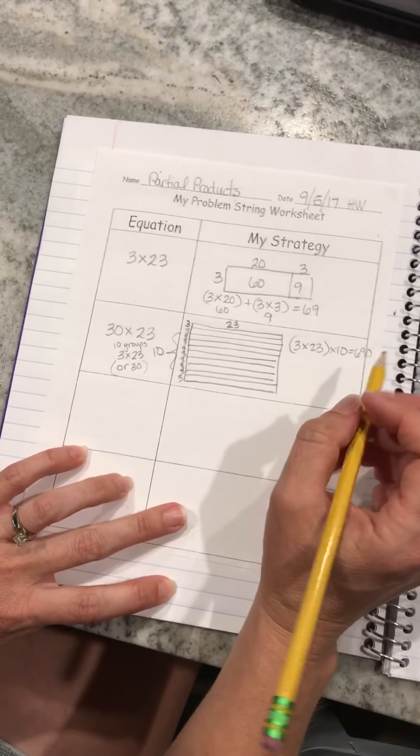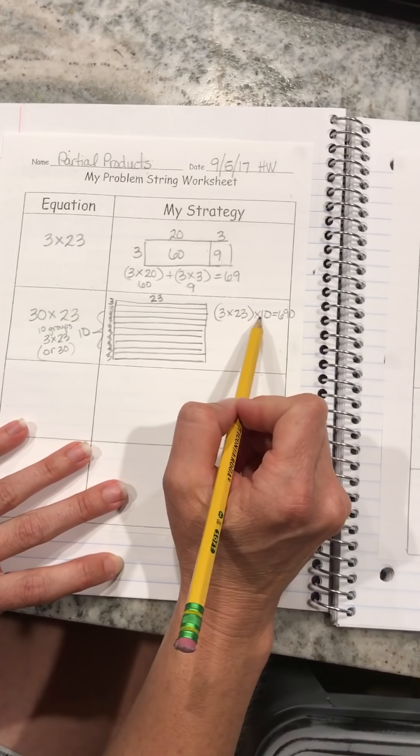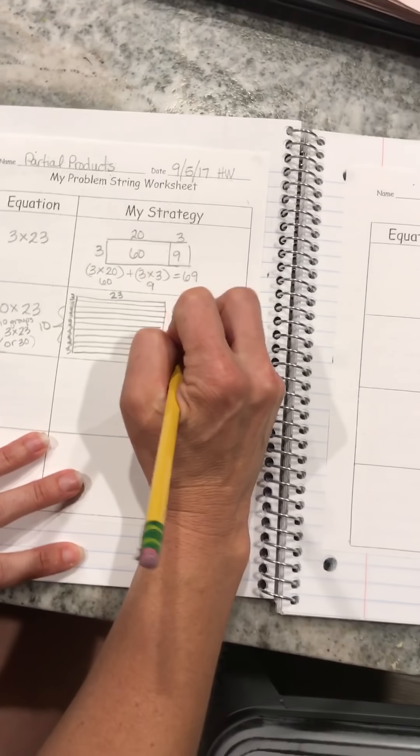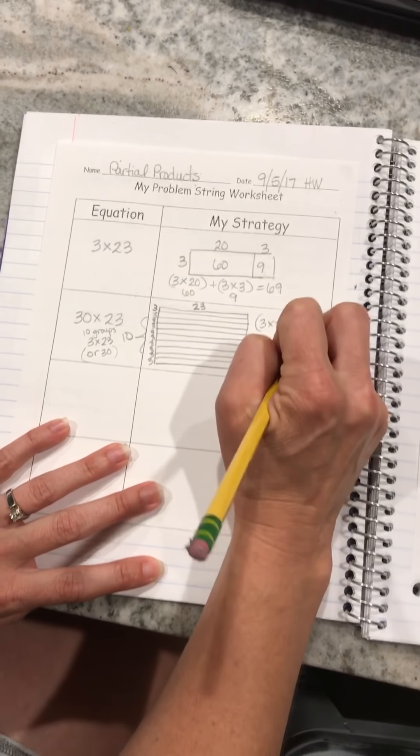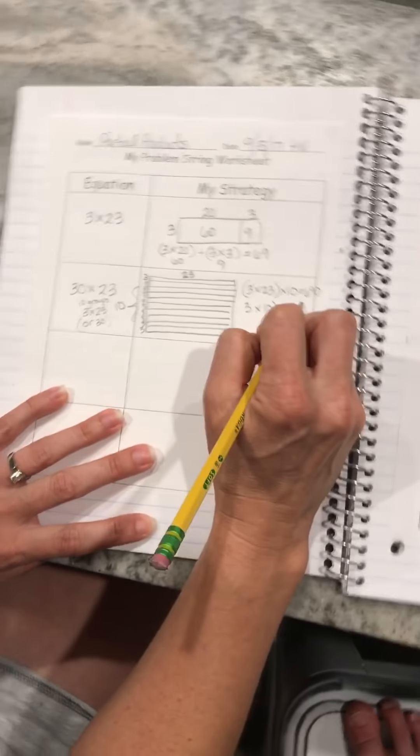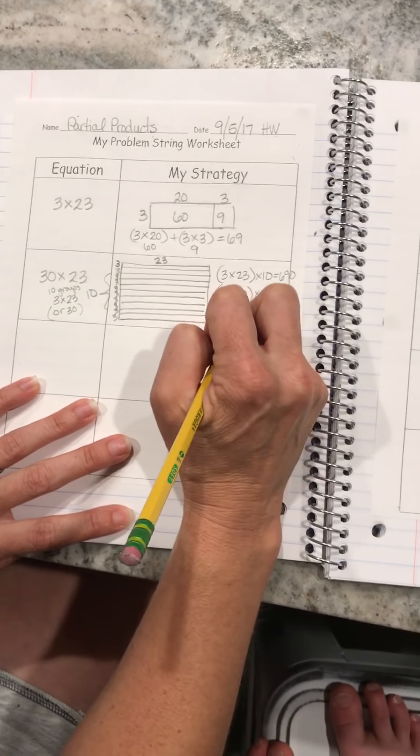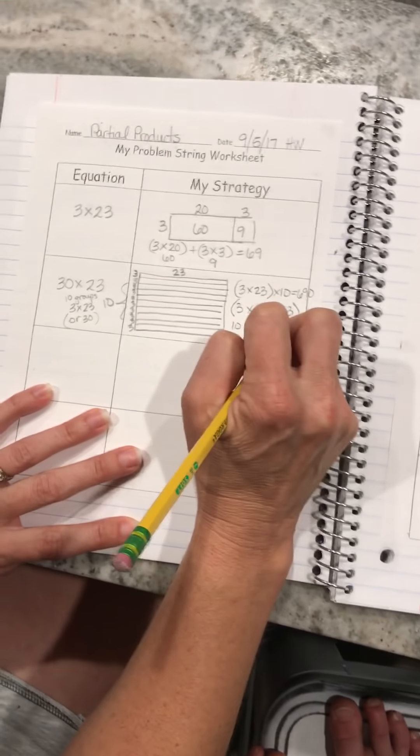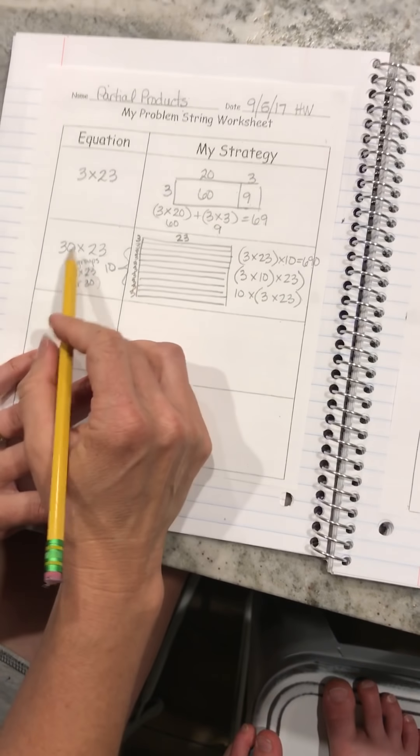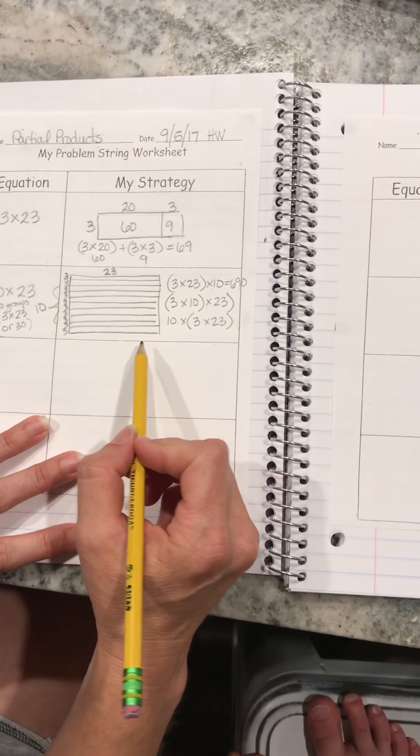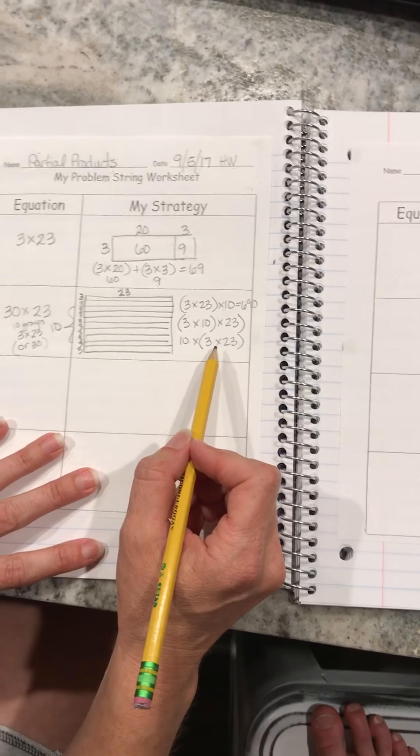So here I can do 3 times 23 times 10 to give me 690, or I can do 3 times 10 times 23, or I can do 10 times 3 times 23. Whichever way that I want to break up my 30 times 23, I will still get the same answer of 690.